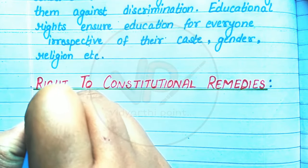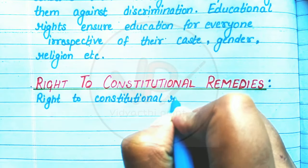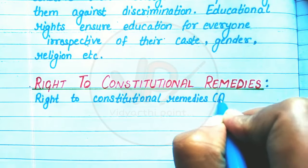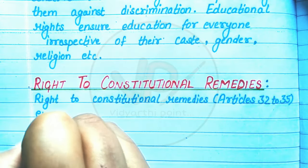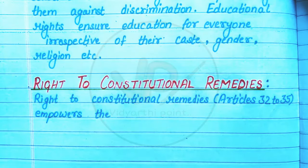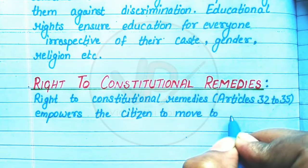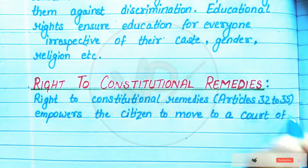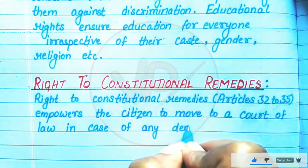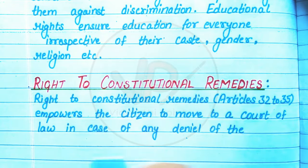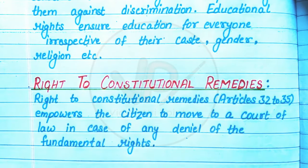The sixth is the Right to Constitutional Remedies, under Articles 32 to 35. It empowers the citizen to move to a court of law in case of any denial of their fundamental rights.